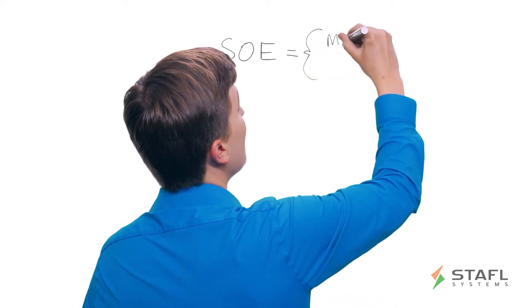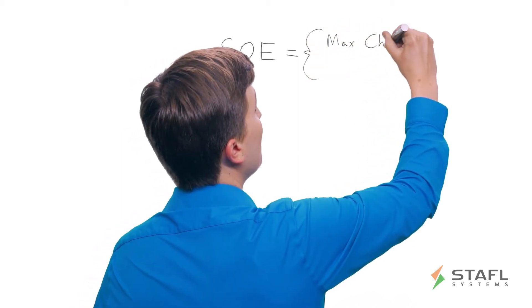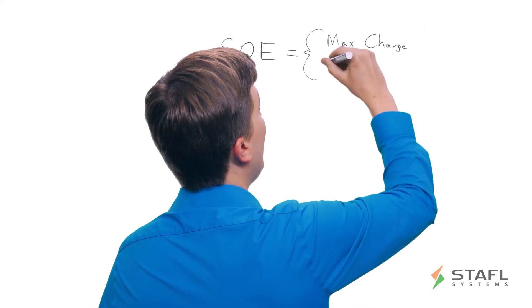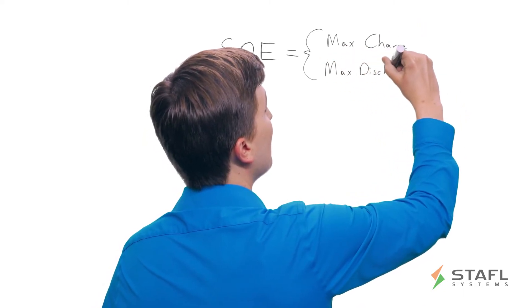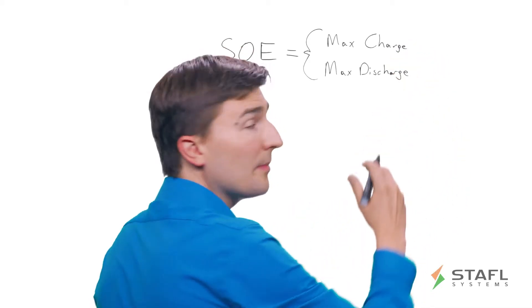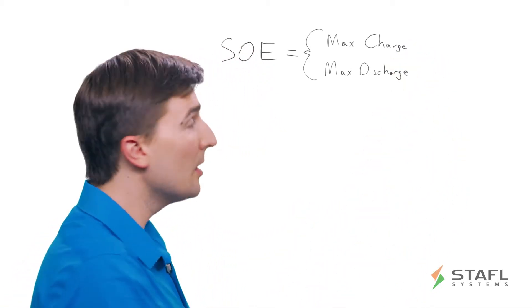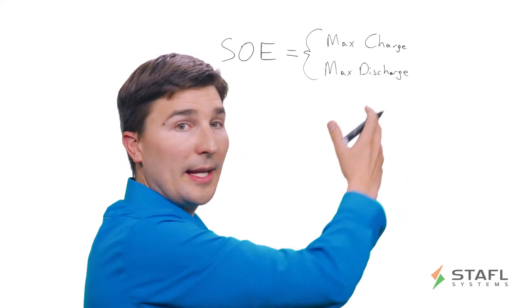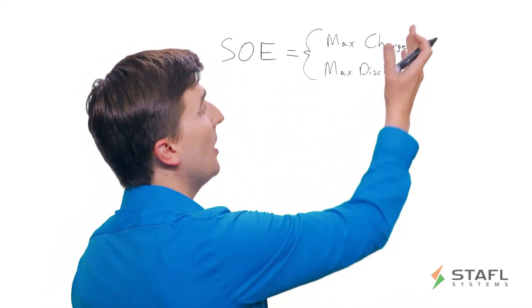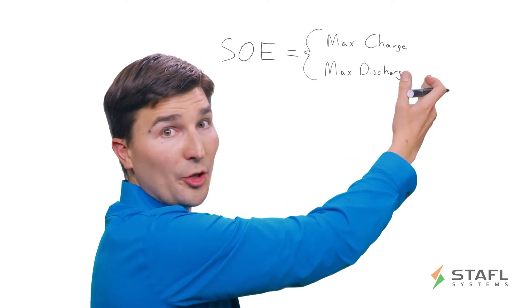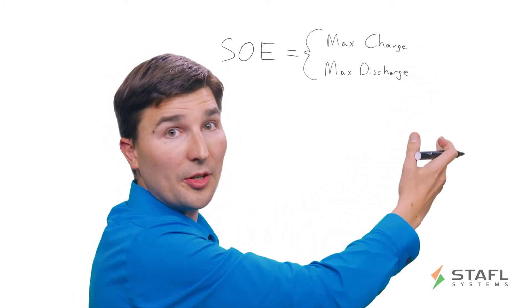It's the max charge current and max discharge current that are allowed at any given time in a battery pack. So, for example, at a specific instance, the SOE could be broadcasting an allowance of 50 amps of charge and 150 amps of discharge.